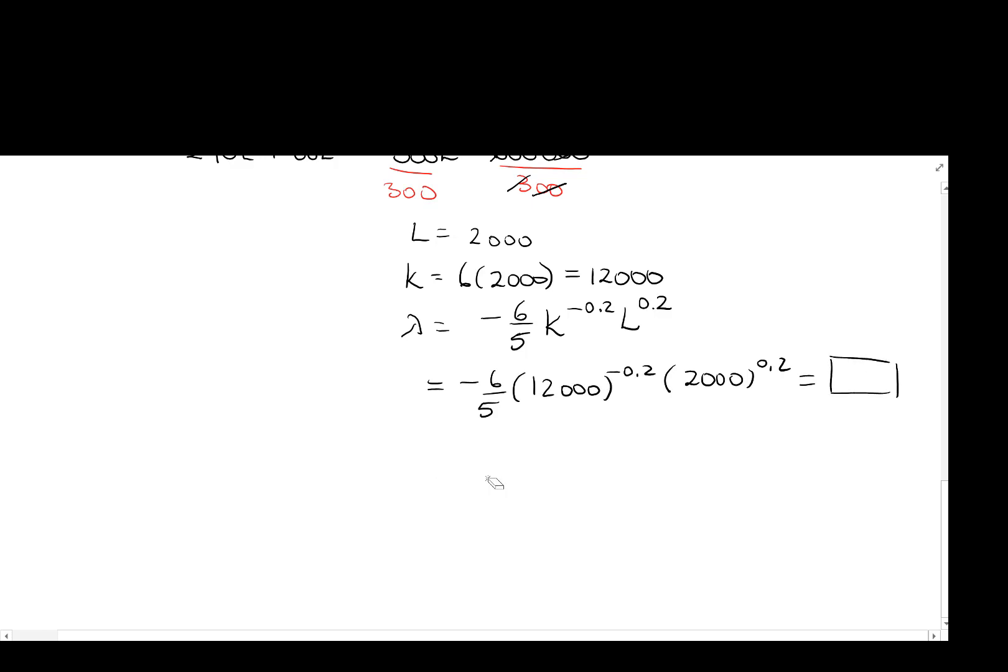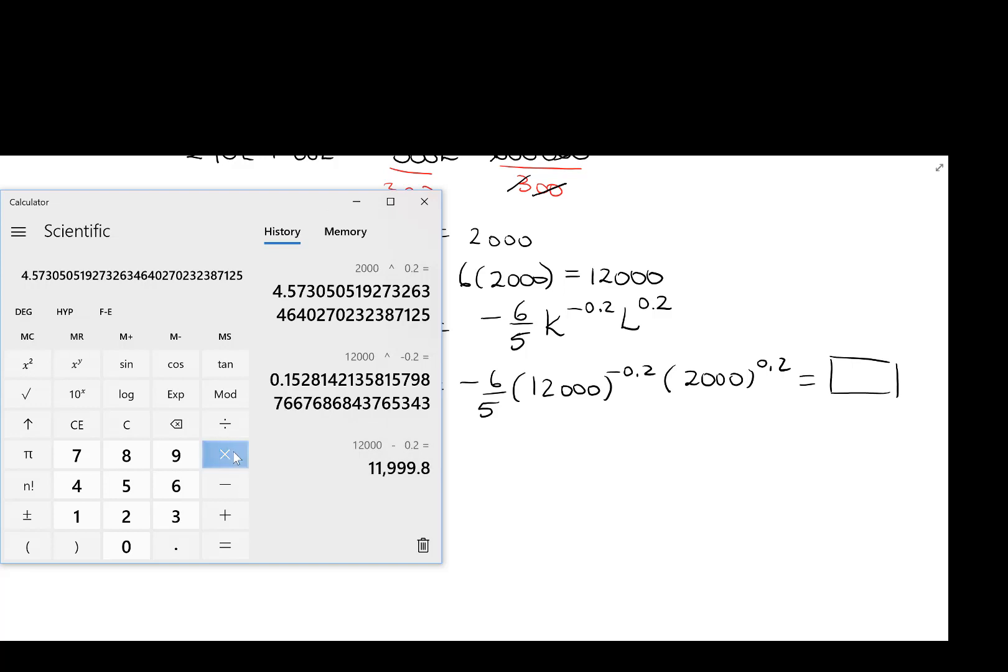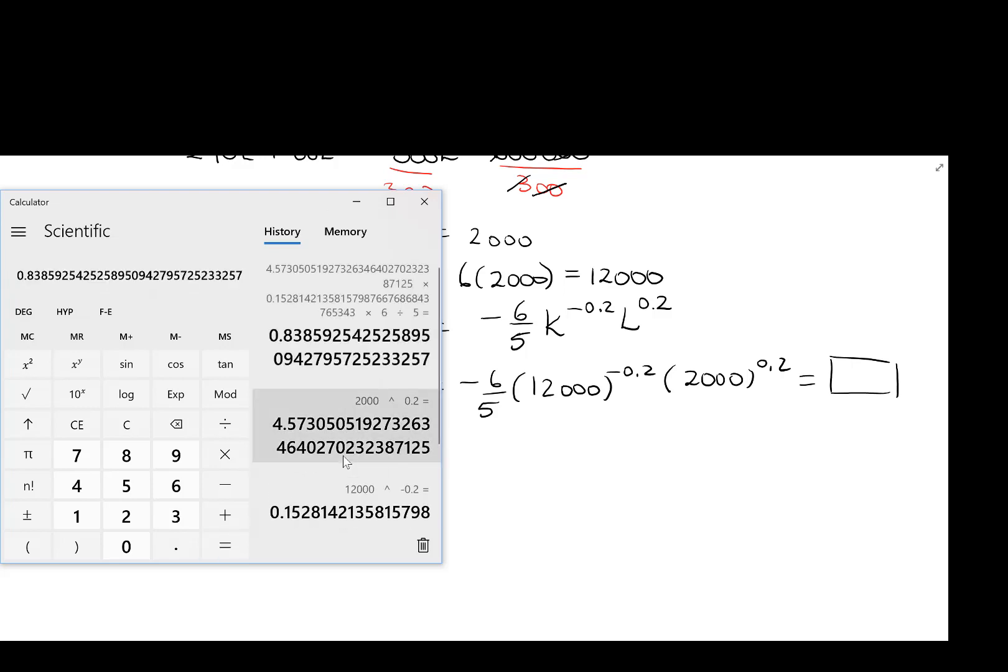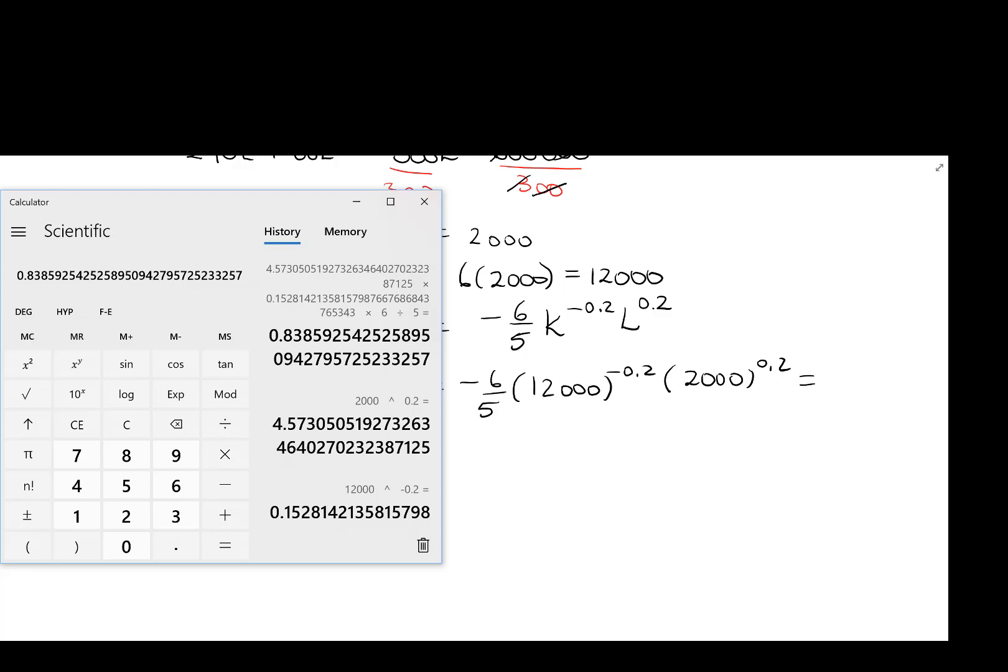Let's go figure out what that is equal to. So now power of 0.2. And then we have 2,000 to the power of 0.2. We're going to times that by the memory, which is this guy. And then times that by 6, divide it by 5. And my lambda becomes negative 0.8386.